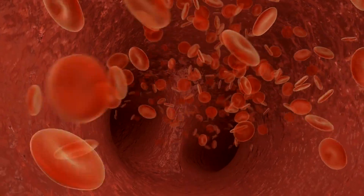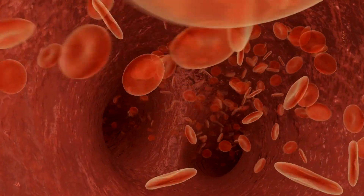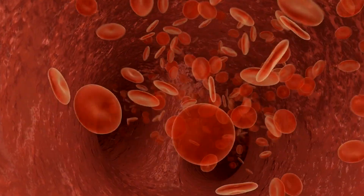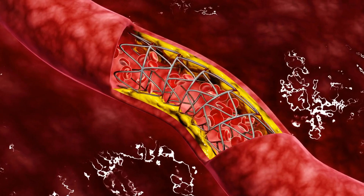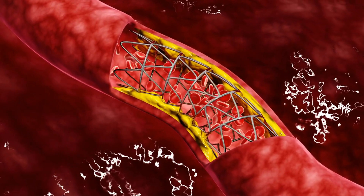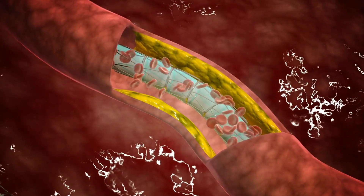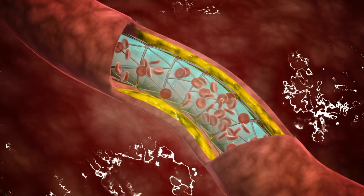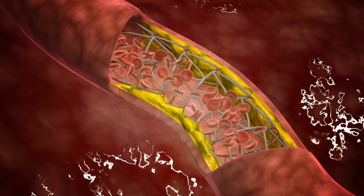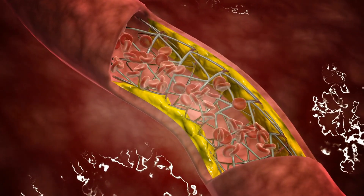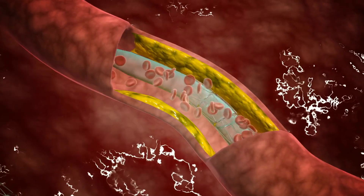By diverting blood flow away from the brain, the risk of embolic stroke during the procedure is significantly reduced. With blood flow safely redirected, the surgeon can proceed with plaque management. Depending on the severity and location of the blockage, the surgeon may opt to remove the plaque through a process called endarterectomy, or deploy a stent to widen the narrowed artery and improve blood flow.